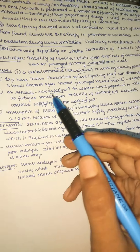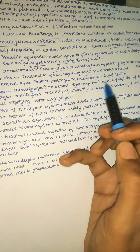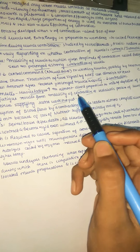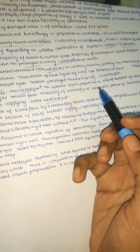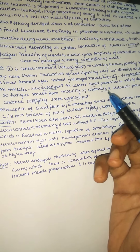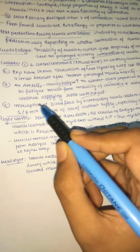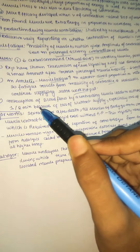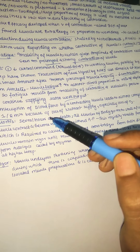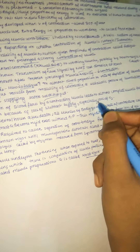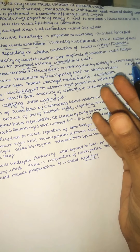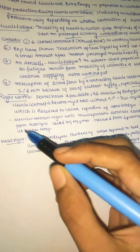Fatigue results from the inability of contractile and metabolic processes of the muscle fiber to continue supplying the same work output. Interruption of blood flow to the contracting muscle leads to almost complete muscle fatigue within one to two minutes due to loss of nutrient supply, especially loss of oxygen.